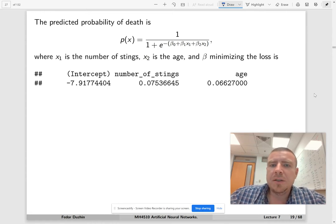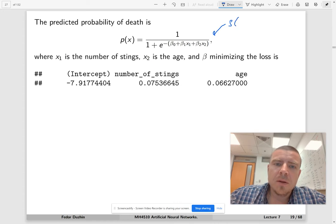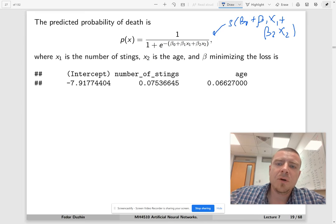So the predicted probability of death is now our logistic function. So this is sigmoid of beta 0 plus beta 1 x1 plus beta 2 x2. And so we have one more value.